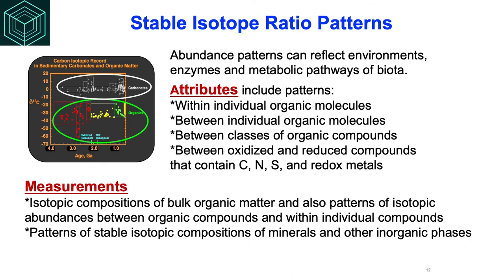Stable isotope ratio patterns are related. Stabilized patterns of isotopic discrimination arising from enzymatic catalysis and metabolic pathways could, in concert with organics and other features, be diagnostic of life. The key aspect would be to look for patterns of isotope values between substances linked by networks of chemical reaction pathways — can we see patterns between organic molecules in their isotopes that suggest some kind of biosynthetic network? For that, we look at isotopic patterns within individual organic molecules, between individual molecules, between classes of organic compounds, and between oxidized and reduced compounds containing biologically important elements.